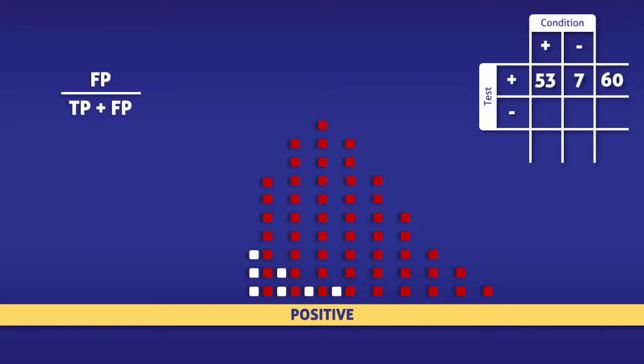Now all that's left to do is enter the data into the equation. In doing so, we find that the false discovery rate is 7 over 60, which is 12%.